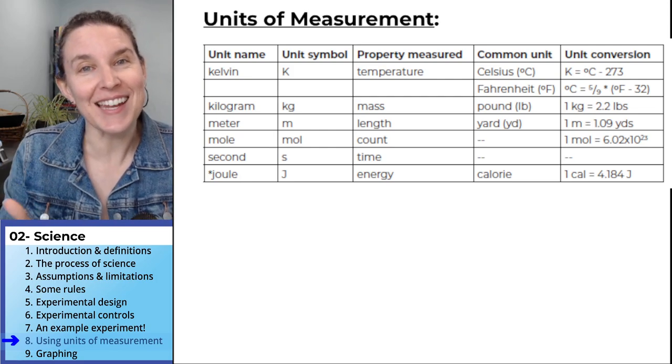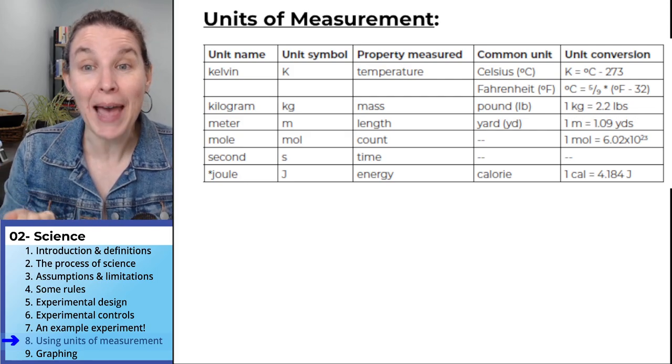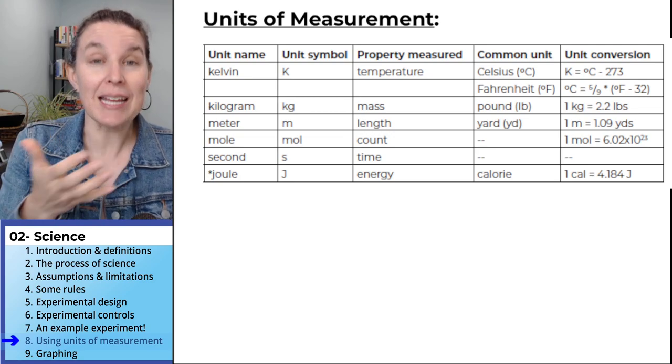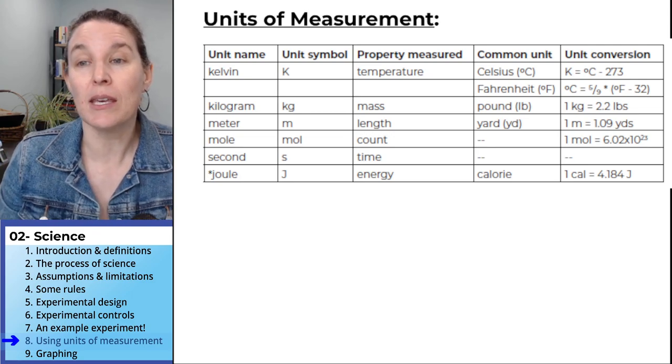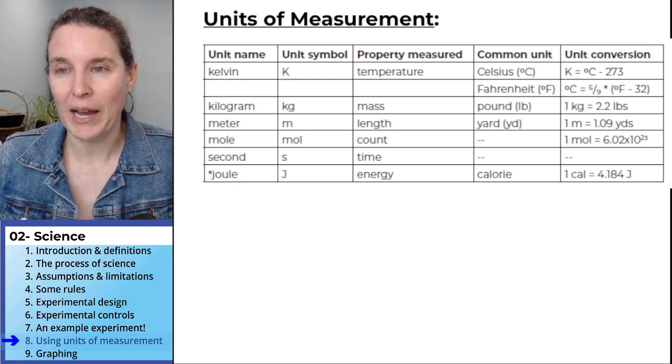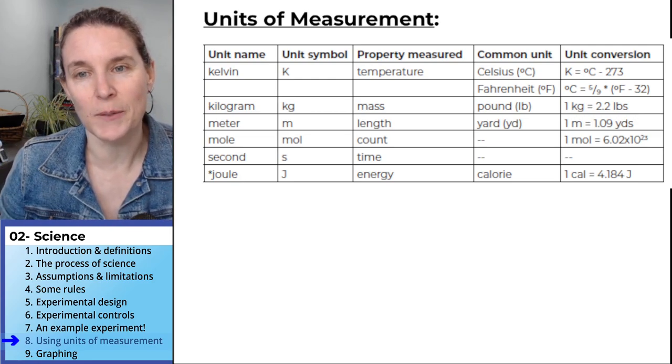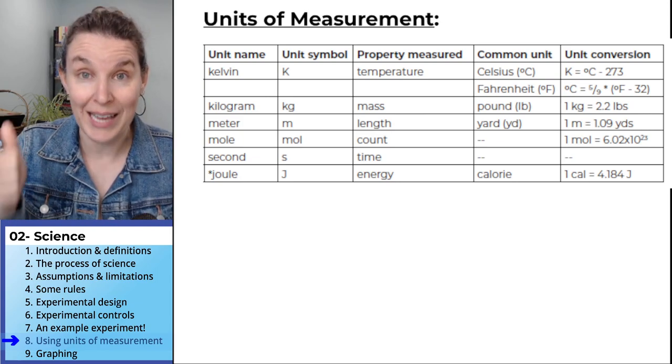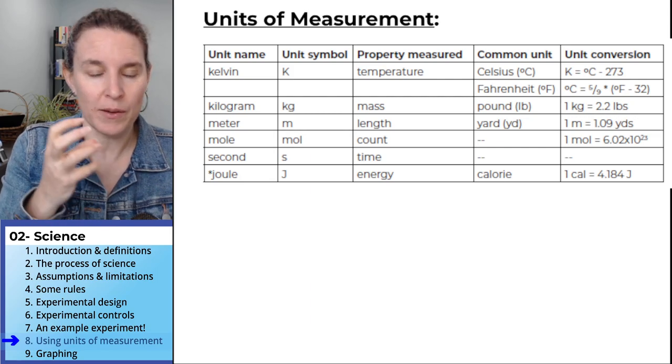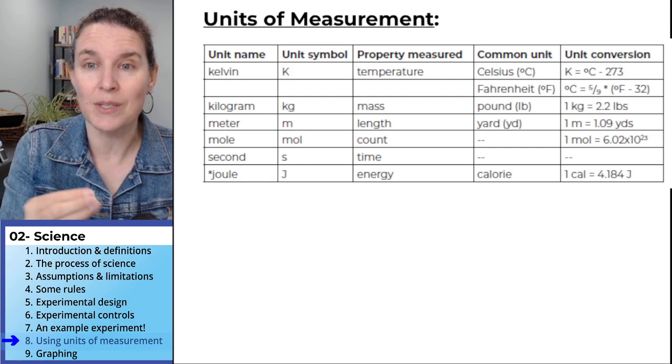The next property that we measure is mass. The common or scientific unit of mass is going to be the kilogram. The American version is the pound, and I've included the conversion there. We will talk length in this class, and the common or the scientific unit that we will use is the meter.